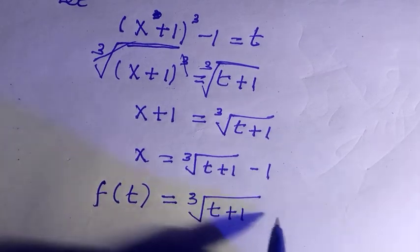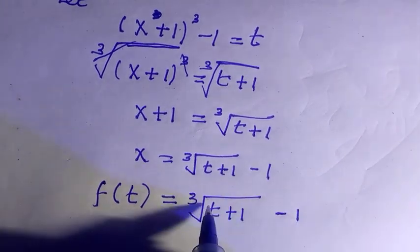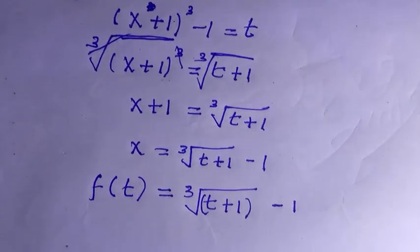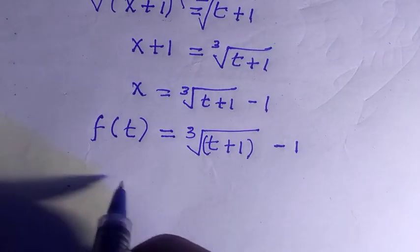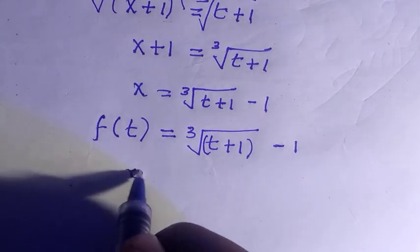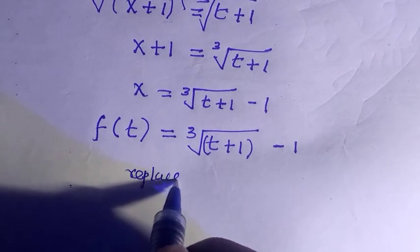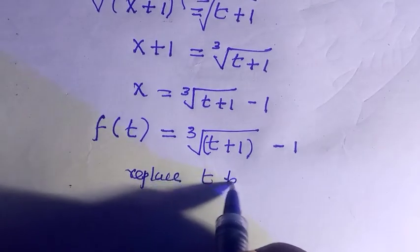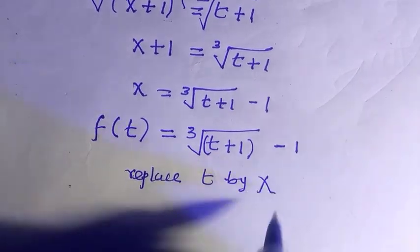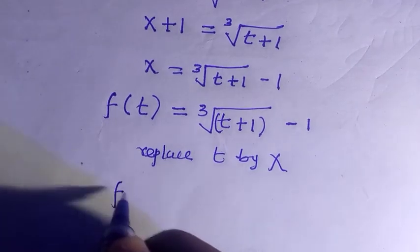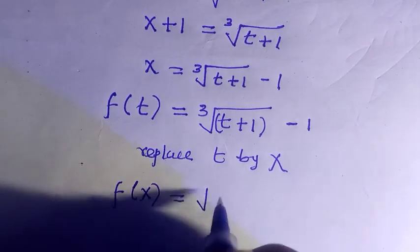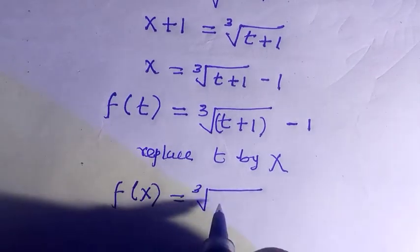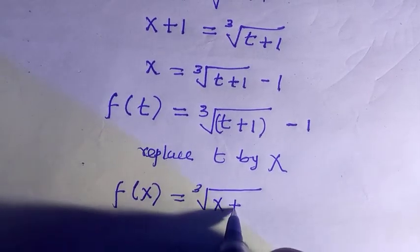But we are asked to calculate f(x), so we just replace t with x. We can use any variable. So we have f(x) = ³√(x+1) - 1.